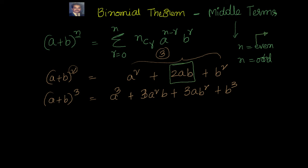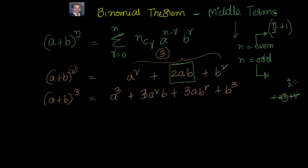The formula we found is n/2 + 1. Let's verify: if n is 4, then (a + b)^4 has 5 terms: 1, 2, 3, 4, 5 — and the middle term is the 3rd, with 2 terms on each side. Applying the formula: 4/2 + 1 = 3. So we are fine. That formula works for even n.